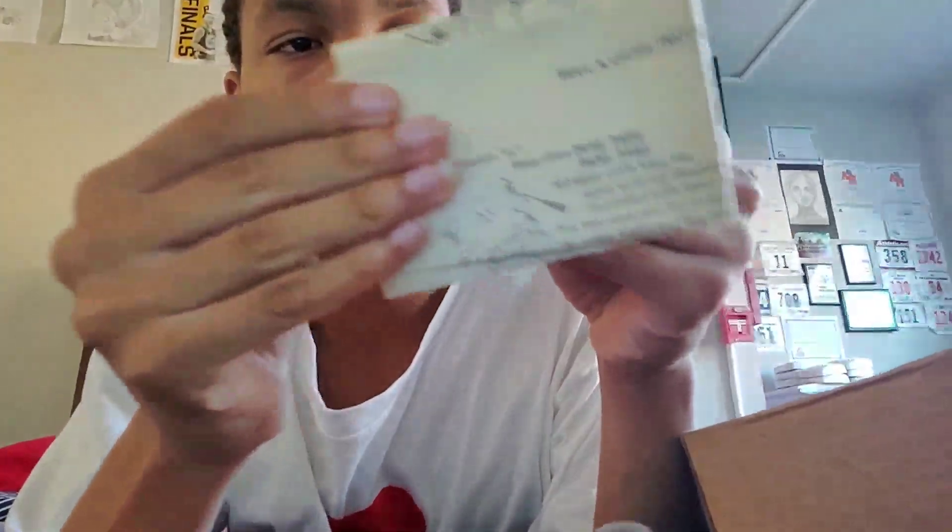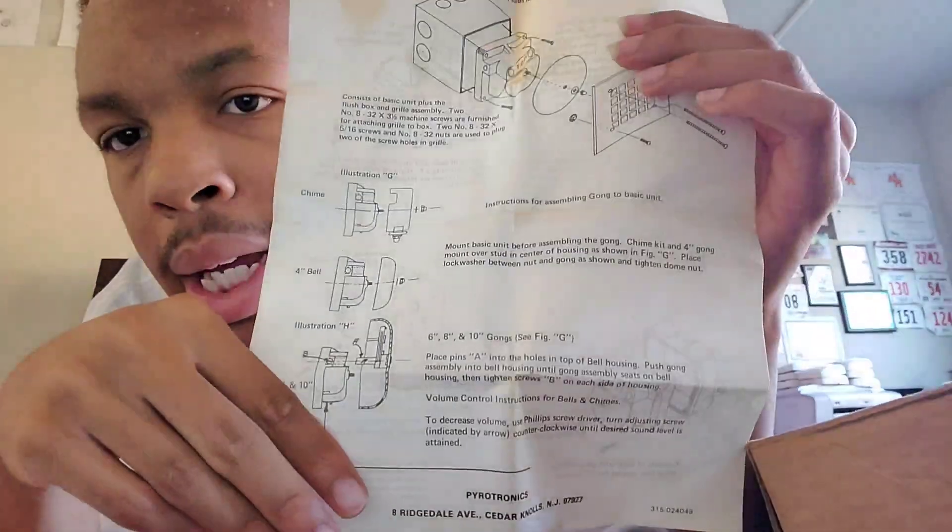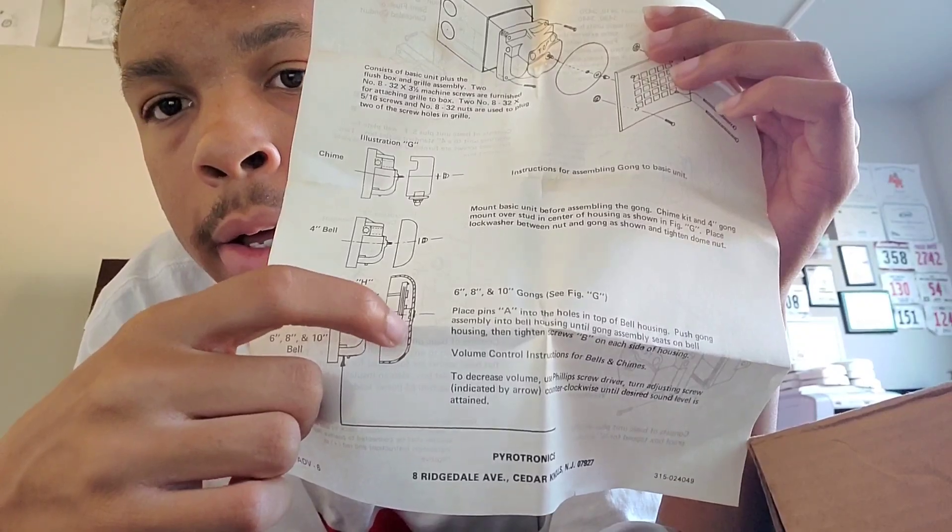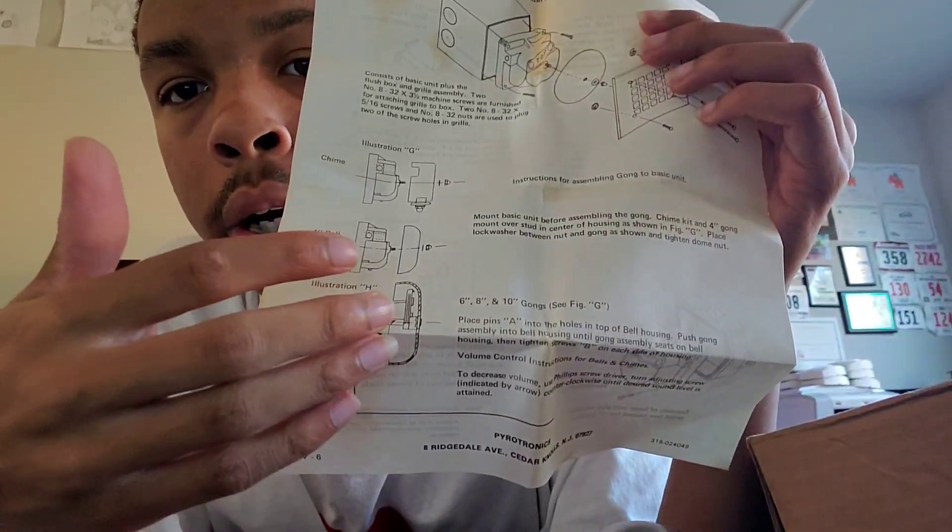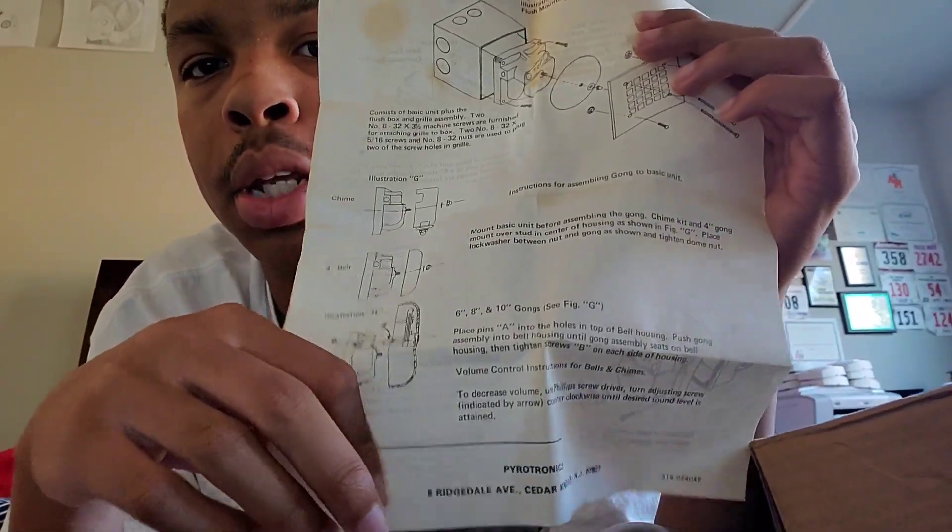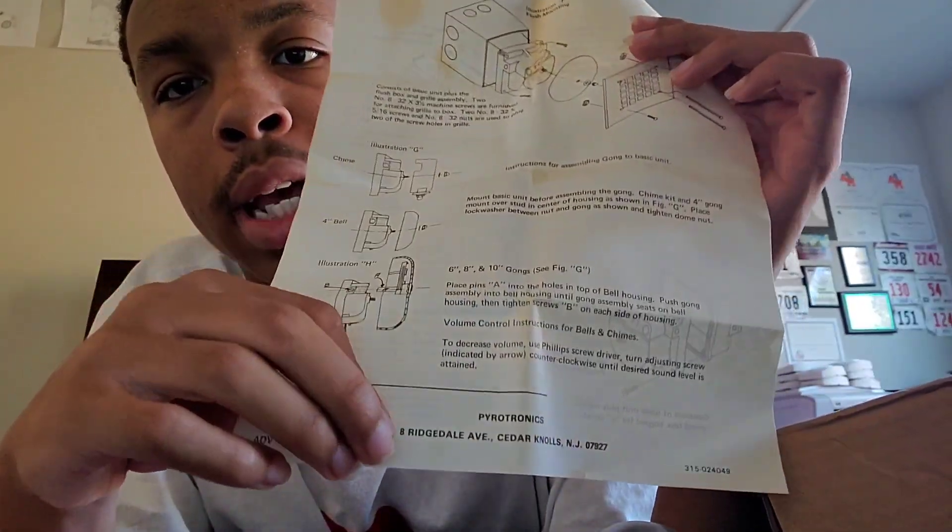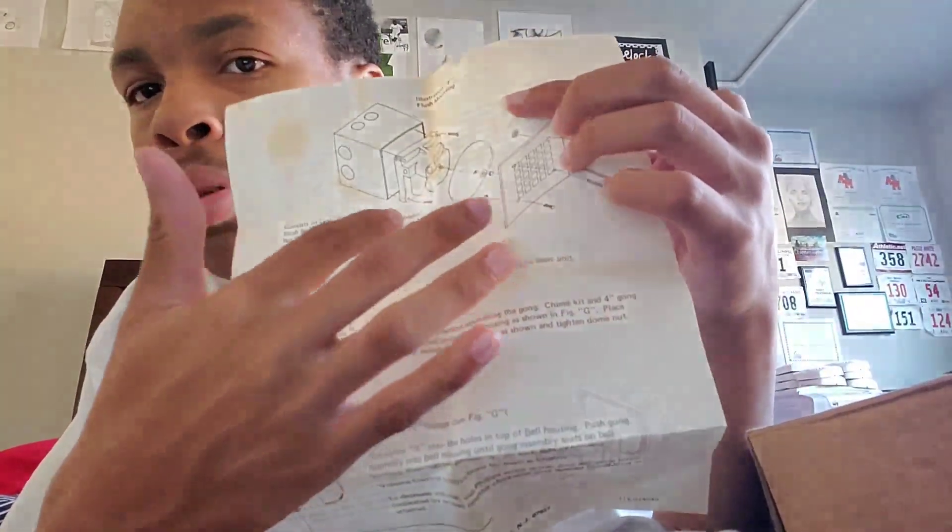Being a new unboxed device, we obviously have documentation right here. Let's go ahead and go over that real quick. Basically tells you the mounting options and things like that. Like I said, this could also have a gong for a bell on this assembly too. Their chimes and their bells use the same assembly.